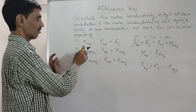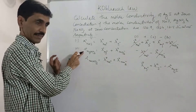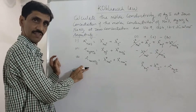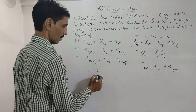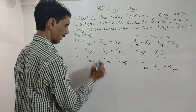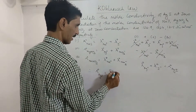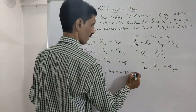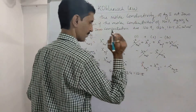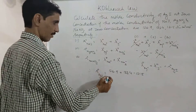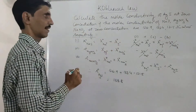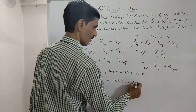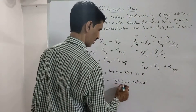So we simply add the molar conductivities of sodium iodide and silver nitrate, then subtract sodium nitrate. Therefore, the molar conductivity of AgI = 126.9 + 133.4 − 121.5 = 138.8 ohm⁻¹ cm² mol⁻¹. Let's verify: 126.9 + 133.4 = 260.3, and 260.3 − 121.5 = 138.8.